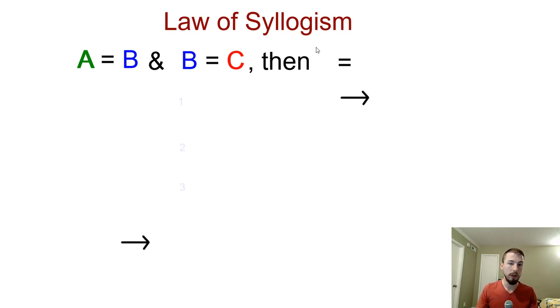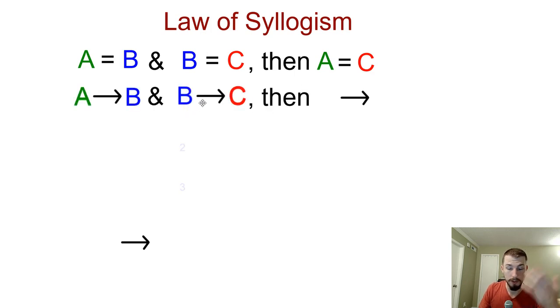Then we have the law of syllogism. Now law of syllogism looks very similar to the transitive property, which you already know. So if A is equal to B and B is equal to C, then we can claim that A is equal to C. The transitive property allows us to skip over the part in the middle. If we have two things that are equal to the same thing, then they're equal to each other. So law of syllogism is the exact same property or same idea, but we're using logic. So instead of them being equal, it's going to be A implies B. If A implies B and B implies C, then we can say that A implies C.